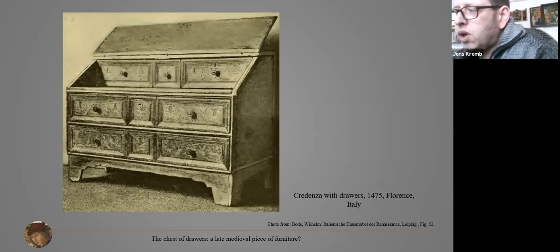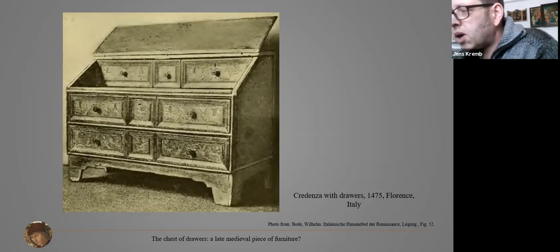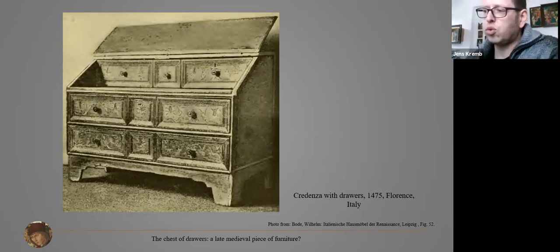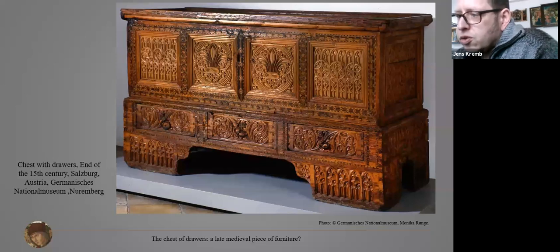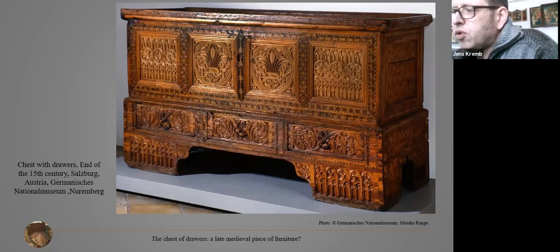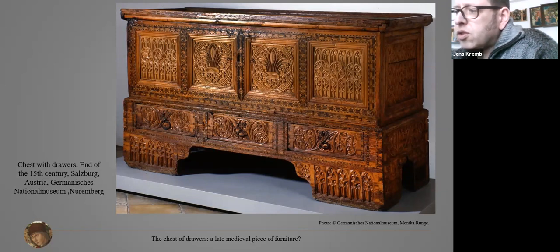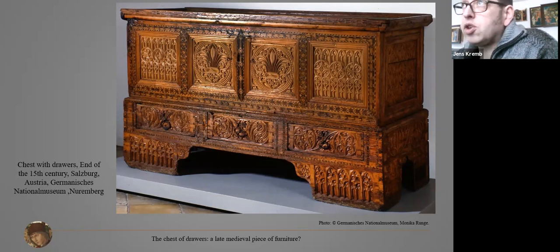You have to be careful with Italian pieces connected to Wilhelm Bode, because he was a great collector for the German market at that time and not every piece he imported from Italy was an original one. Early chests with drawers can also be found in Austria — here one typical example from the region nearby Salzburg, dated to the end of the 15th century. It shows the same construction style as the chest with drawers in Southwold Cathedral seen at the beginning, but this chest is dated much earlier.